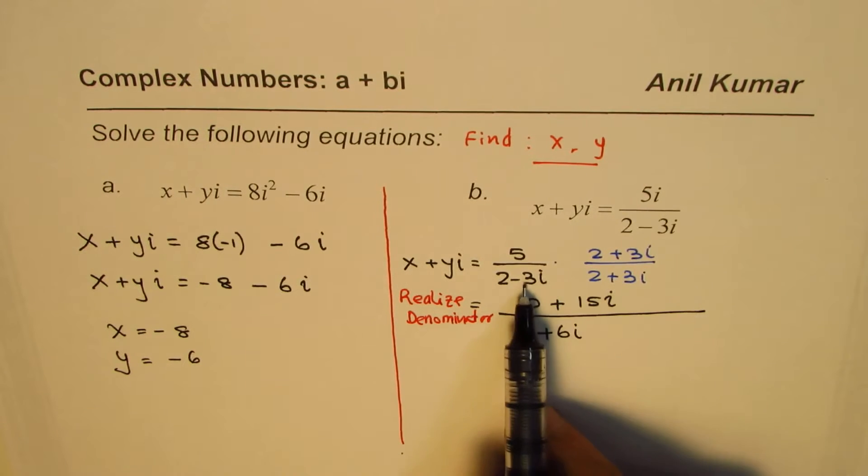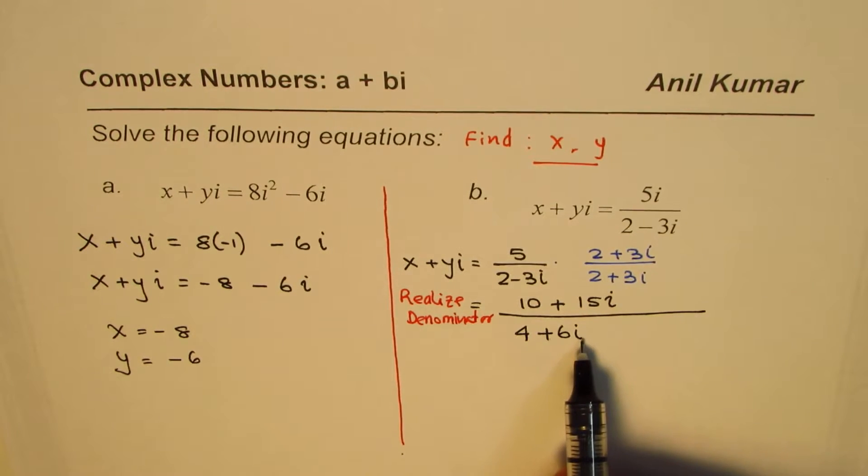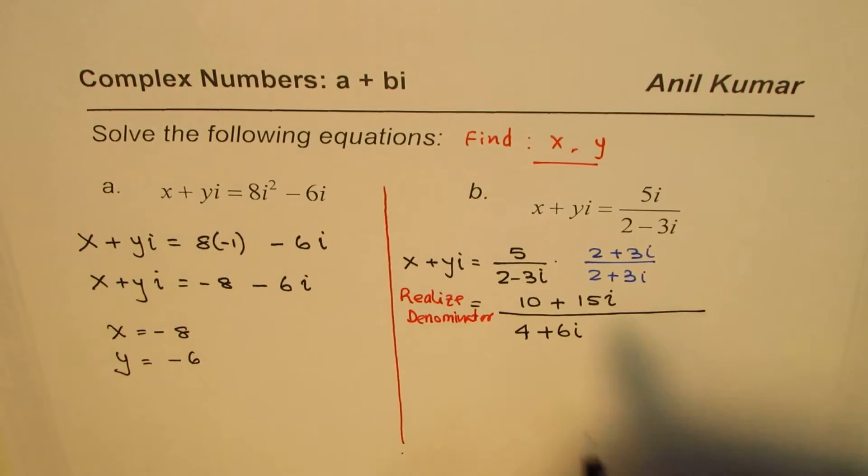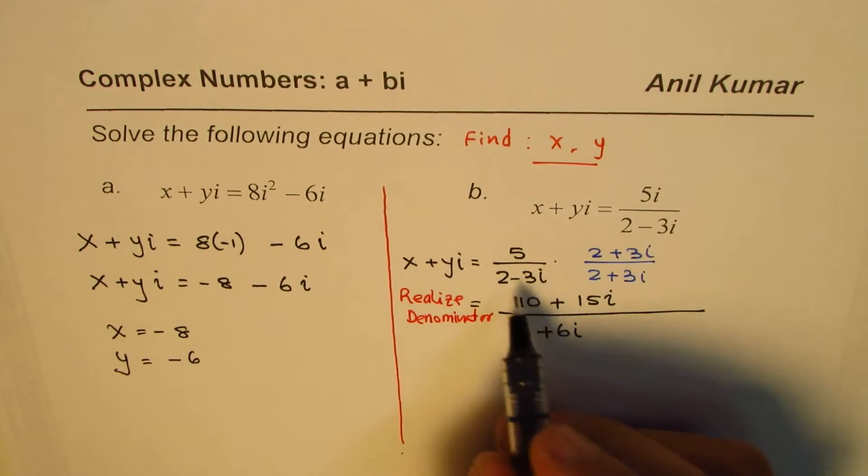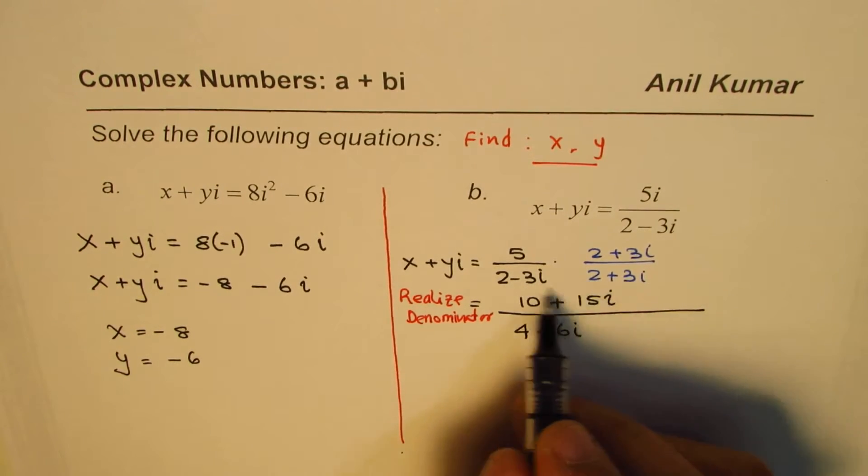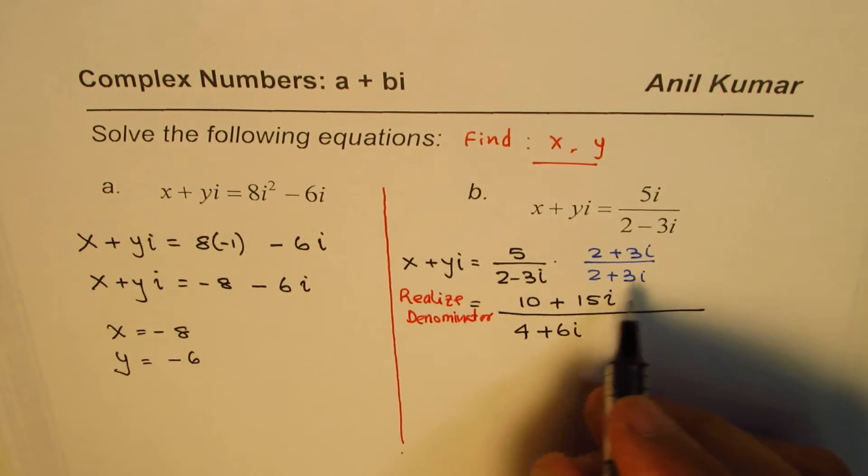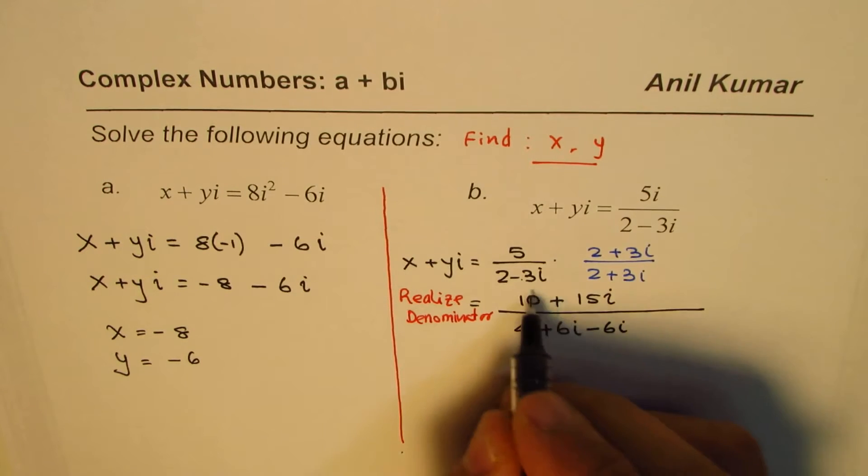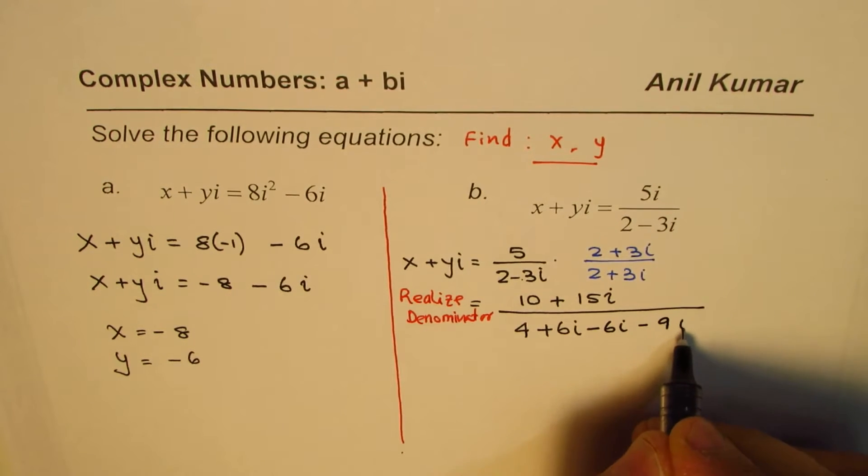a plus b times a minus b is a squared minus b squared and do it in one step. However, let me expand. We multiplied first by 2, both the terms 2 plus 3i. Now with minus 3i, we get minus 6i and minus 9i squared.